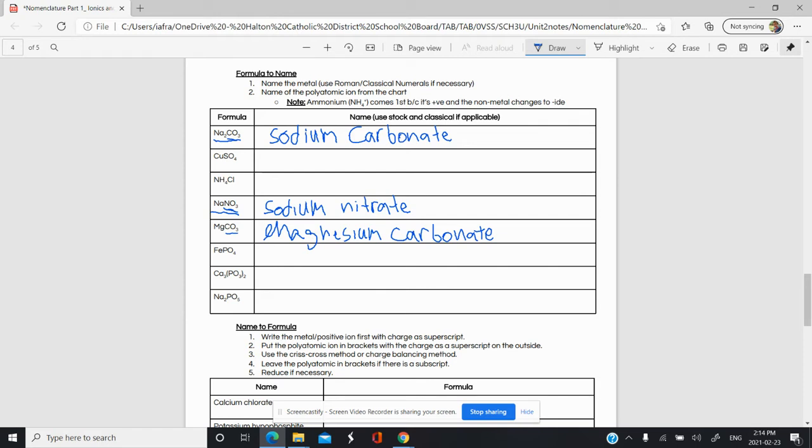Let's look at the next one, Ca3(PO3)2. The identity of the polyatomic ion is determined by what's inside here. Don't worry about the subscript on the outside. Worry about what's inside.